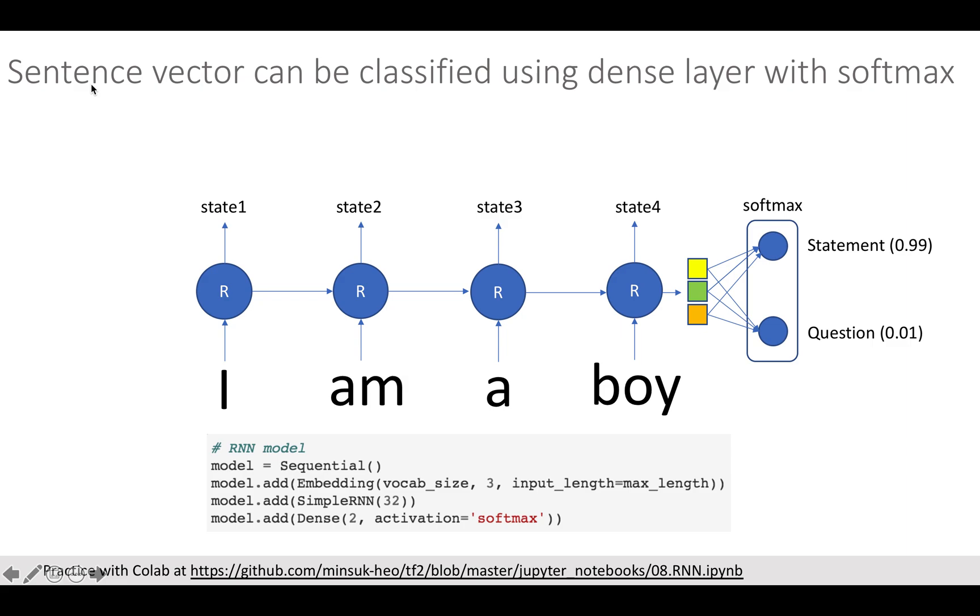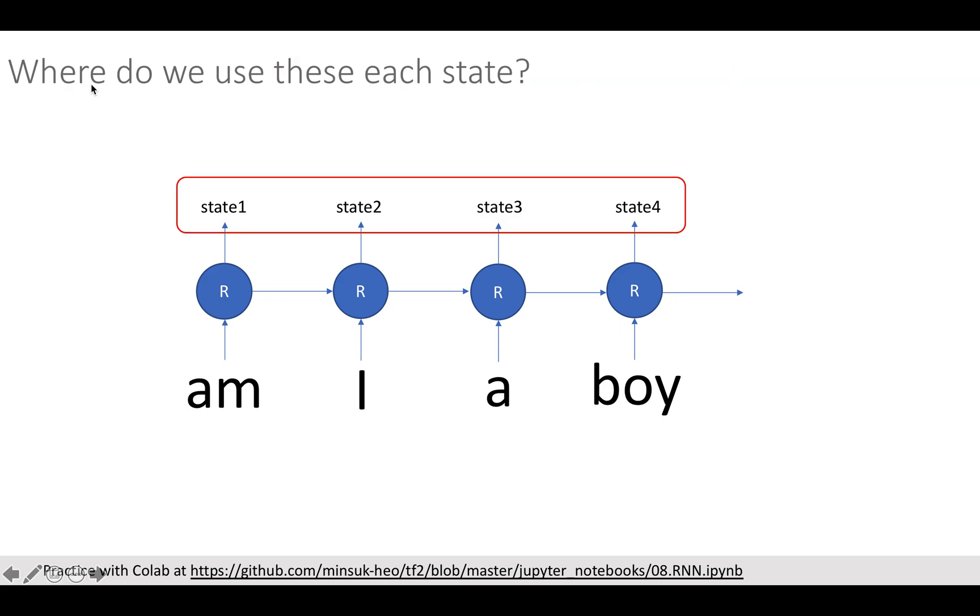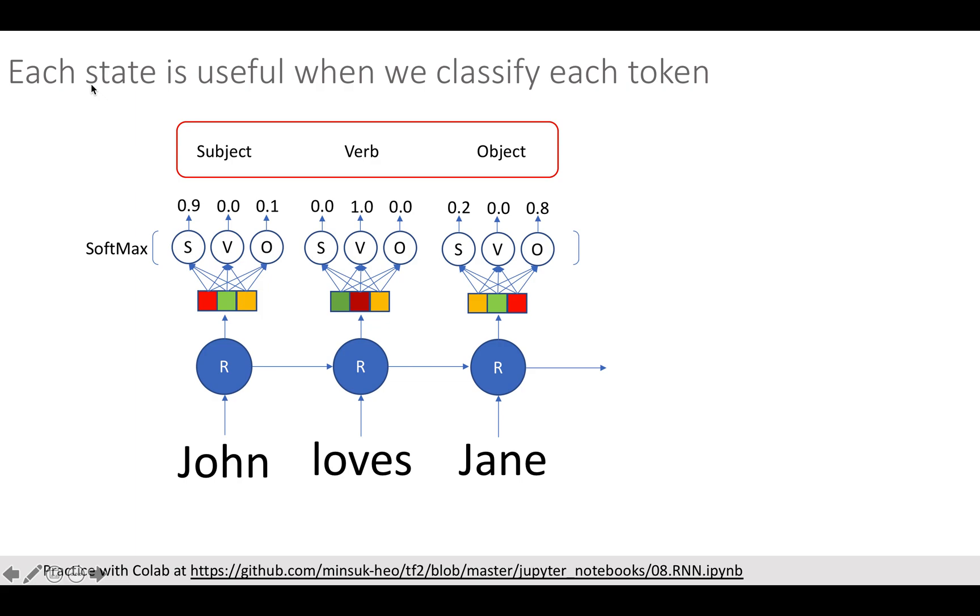You might have a question: where do we use each state of RNN cell? Actually each state is very useful when we classify its state. For example, part of speech tagging, named entity recognition. Here I give you the example of classifying English words into subject, verb, or object. Since each state is also a vector, we can use dense layer with softmax to classify into predefined classes.